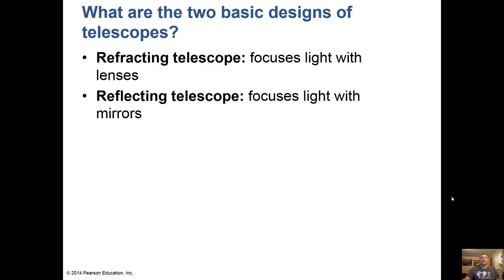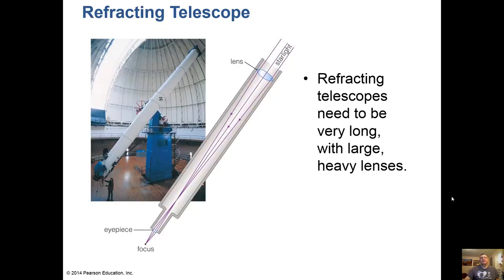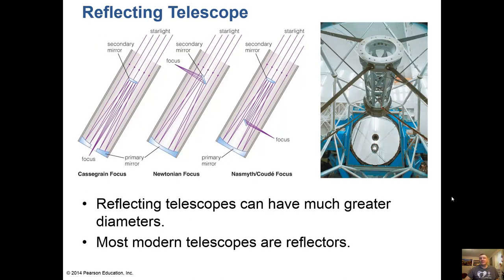Two basic designs of telescopes are refracting and reflecting. Refracting uses lenses and reflecting uses mirrors. Most modern telescopes are reflectors. There is actually a physical size limit of about 40 inches for a lens-based telescope. The world's largest refracting telescope is near Chicago. Refracting telescopes need to be very long with very large, heavy lenses, so we don't use these anymore.